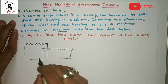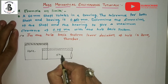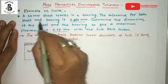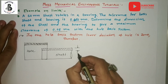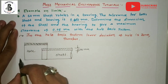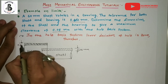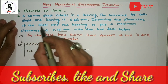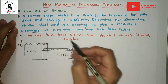According to the data, we are using the hole basis system. The tolerance for the shaft is 0.060mm and similarly for the hole, the tolerance is also 0.060mm. We need to determine the dimensions to give a maximum clearance of 0.08mm.